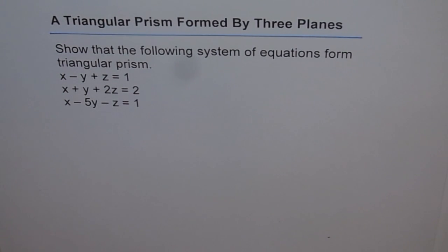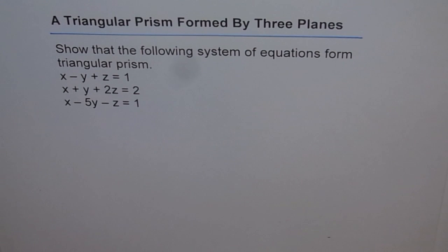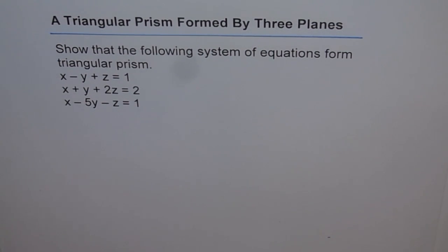A triangular prism formed by three planes. Show that the following system of equations forms a triangular prism: x minus y plus z equals 1, x plus y plus 2z equals 2, and x minus 5y minus z equals 1.